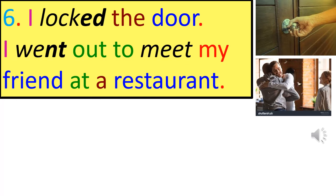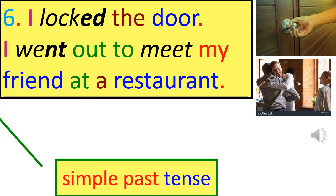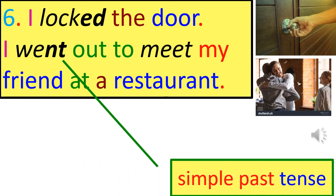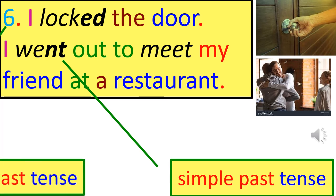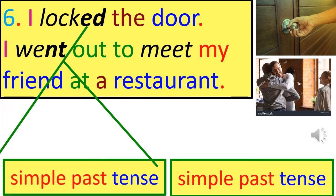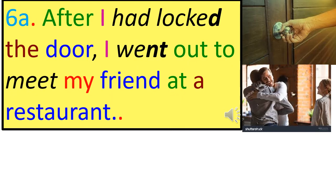Sentence pair 6: 'I locked the door. I went out to meet my friend at a restaurant.' Simple Past is used with finished actions. Combined answer: 'After I had locked the door, I went out to meet my friend at a restaurant.'